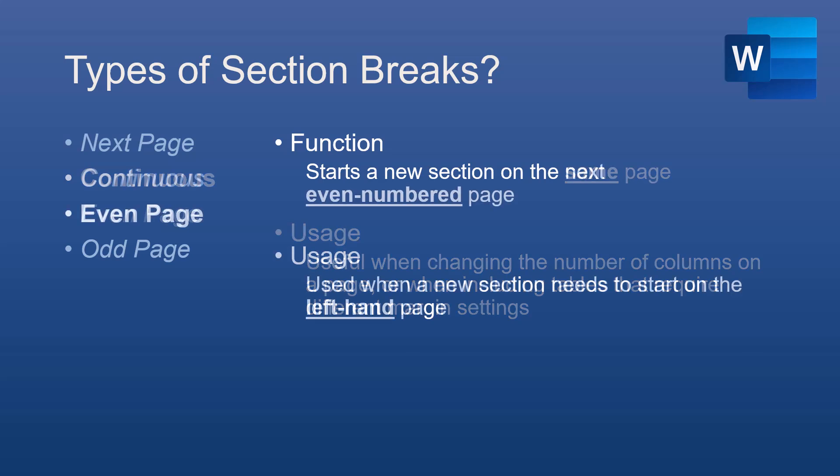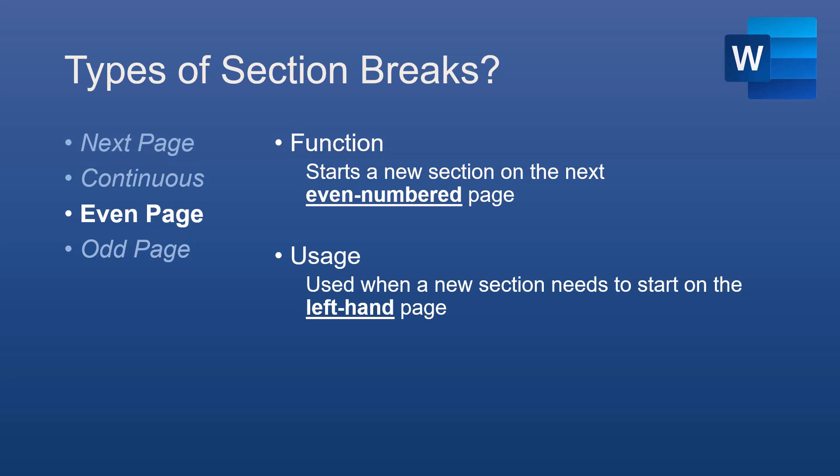The Even Page Section Break inserts a Section Break and starts the new section on the next even-numbered page. This is often used in printed documents where sections should start on the left-hand page. An Odd Page Section Break is the opposite — it starts the new section on the next odd-numbered page, common in books or formal reports where sections typically begin on the right-hand page.